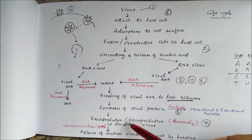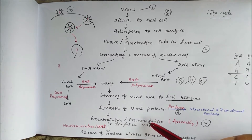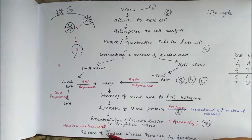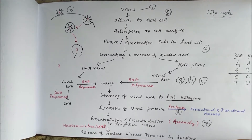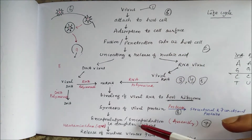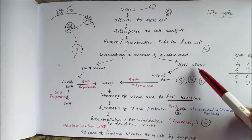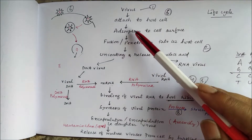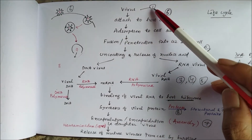After assembly, the daughter viruses form, and the infected host cell bursts to release mature virus. Some viruses require enzymes for this release — for example, the H1N1 virus uses the enzyme neuraminidase to help release mature virus from the cell. These steps represent the key targets for antiviral drugs.